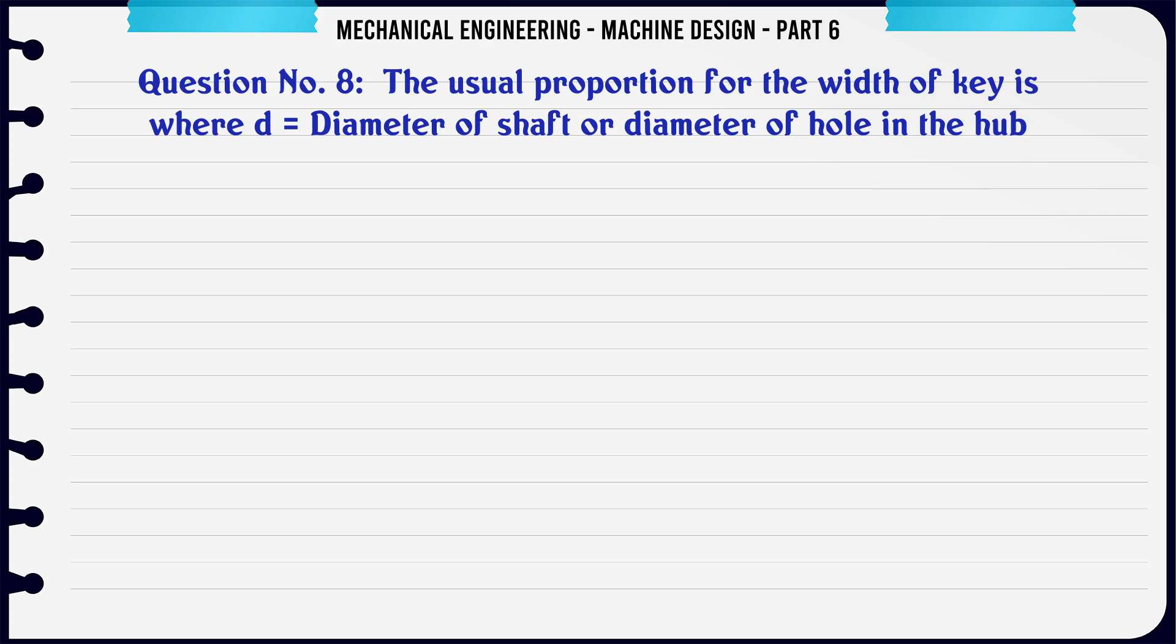The usual proportion for the width of key is, where D is diameter of shaft or diameter of hole in the hub: A) D/8, B) D/6, C) D/4, D) D/2. The correct answer is D/4.